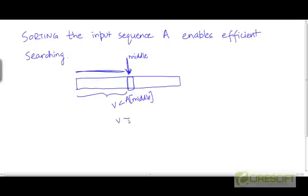Likewise, if v is greater than the value of the middle element, we restrict our search to the right half of the array, since all elements larger than the middle element are in the right half. So by just one comparison — comparing v with the middle element — we can cut down the size of our subproblem to half of the original size, and then iterate doing the same in every step.